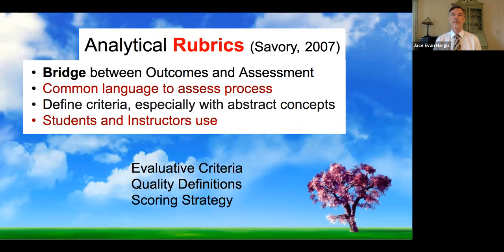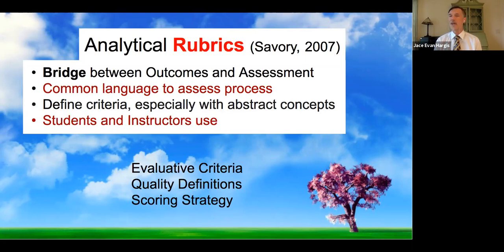Now we're shifting to the rubric aspect. Rubrics are common in K–12 around the world; in higher education, not so much. They're basically a bridge — a communication device, a translator between your outcomes and your assessment. They help create a common language so you can speak to students about what success looks like, so we don't have to wonder: what does that mean? Did I do this right?